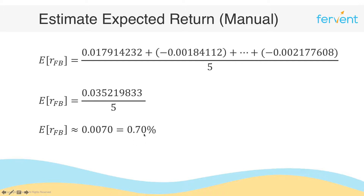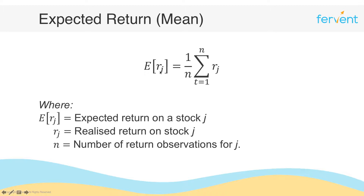So 0.70% would be our estimate for Facebook's expected return. It looks deceptively small, but we're going to touch on that in just a bit. Let's just make sure we understand the formula first. The expected return on any stock j when using the mean method uses the sigma summation operator — and if this is freaking you out right now, please don't let it. It's actually quite straightforward. This thing that looks like a funky e is the sigma summation operator, and all it's doing is adding whatever is in front of it.